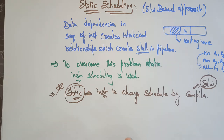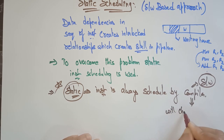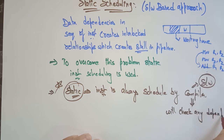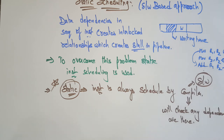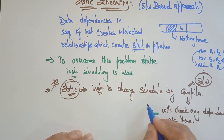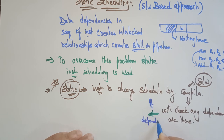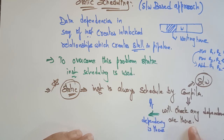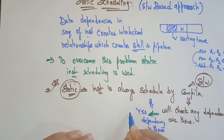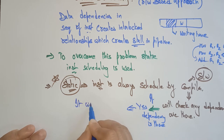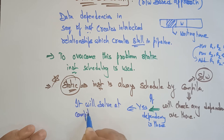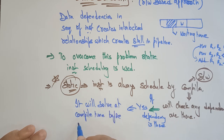The compiler will check if any dependencies exist. Suppose dependencies are there — meaning one instruction is depending on another instruction. If any hazards or dependencies are found, the compiler solves them at compile time, before execution.